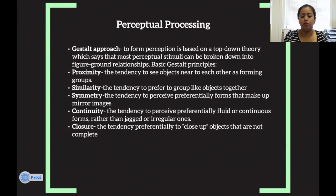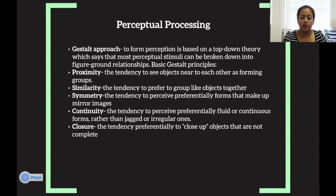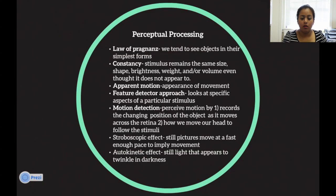The Gestalt approach to form perception is based on top-down theory, stating that most perceptual stimuli can be broken down into figure-ground relations. The basic Gestalt principles are: proximity — the tendency to see objects near each other as forming groups; similarity — the tendency to perceive forms that make up mirror images; continuity — the tendency to perceive fluid or continuous forms rather than jagged or irregular ones; closure — the tendency to preferably close up objects that are not complete; and the law of prägnanz — we tend to see objects in their simplest forms. Constancy means a stimulus remains the same size, shape, brightness, or volume even though it does not appear to.